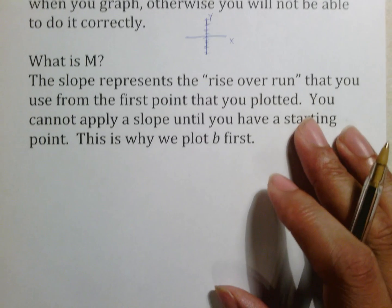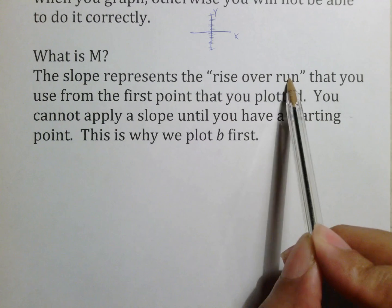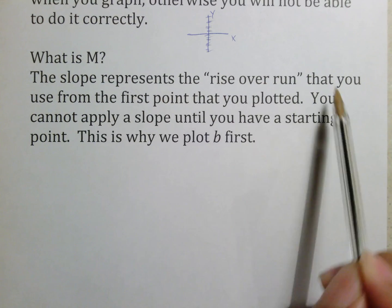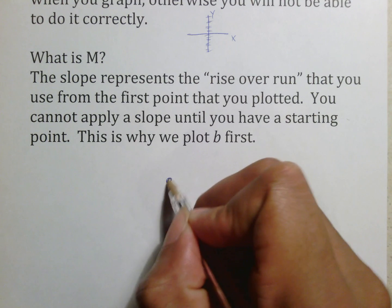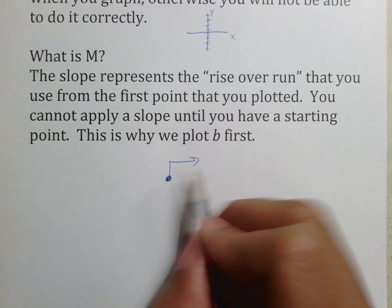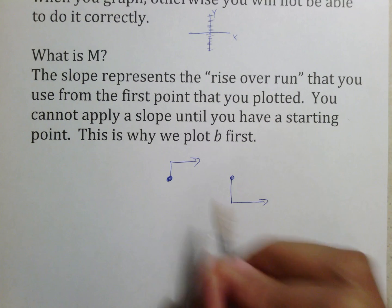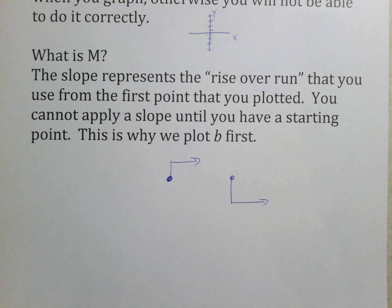M represents rise over run, or the slope. Apply rise over run by going from the first point you plotted and using rise over run from there. If your slope is positive, you go up and to the right, because we always run to the right. If your slope is negative, you go down and to the right — but you always go to the right. There are only a few situations where you won't go right, and I'll discuss those before it happens. Until then, always run right.